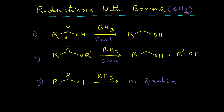In this video we are going to discuss the reductions of carboxylic acids, carboxylic esters, and carboxylic acid chlorides with borane. Borane basically exists as a dimer B2H6, but here it is written as BH3 for simplicity. In these three reaction categories, the first reaction is the reduction of carboxylic acids by borane. The reaction is fast and produces a saturated alcohol.